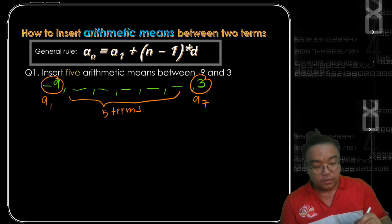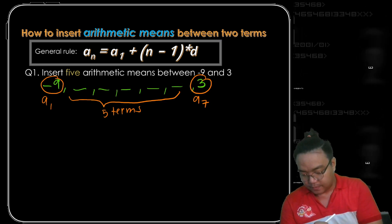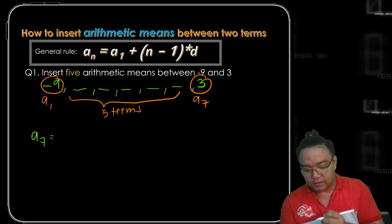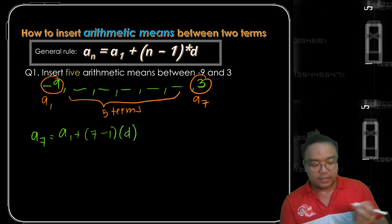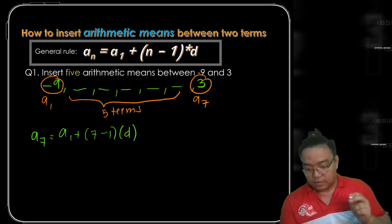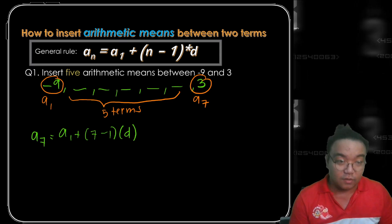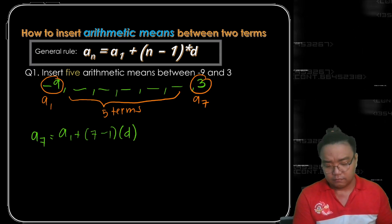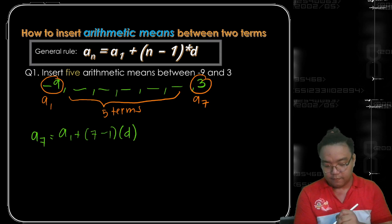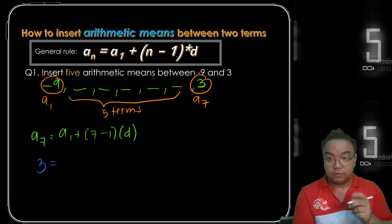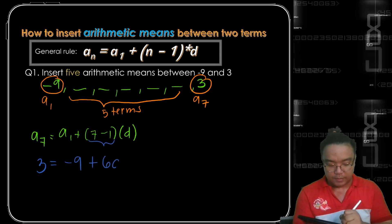Substituting our given to the formula, a sub 7 is equal to a sub 1 plus 7 minus 1 times the common difference. To find the common difference, we substitute the given to the formula: 3 is equal to negative 9 plus 7 minus 1, which is 6, times the common difference d.